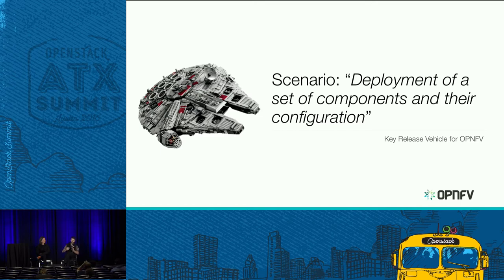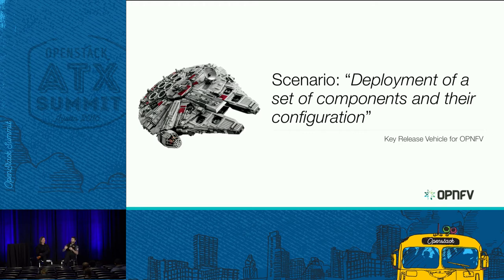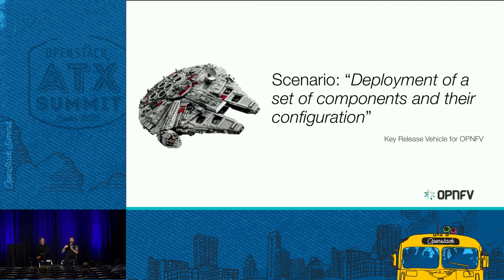We went from one simple scenario in Arno to 24 scenarios in Brahmaputra. What we want to do now is converge those back — the 24 scenarios providing different features or capabilities — we want to normalize them into a smaller subset, maybe six, providing full capability in a more controlled and normalized way. But at the same time we reduce to six, people are adding more on the end, so we'll always have a large number of scenarios.